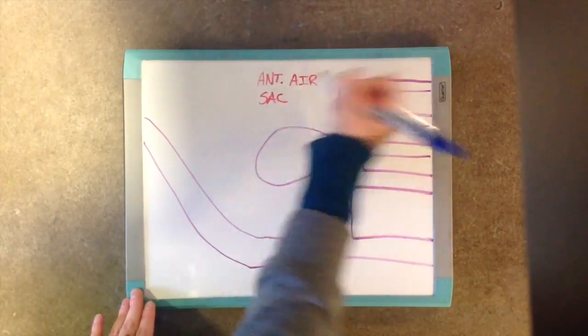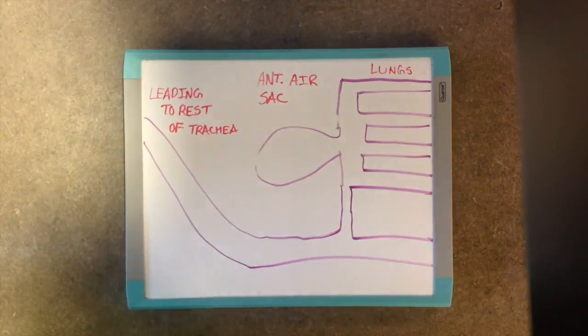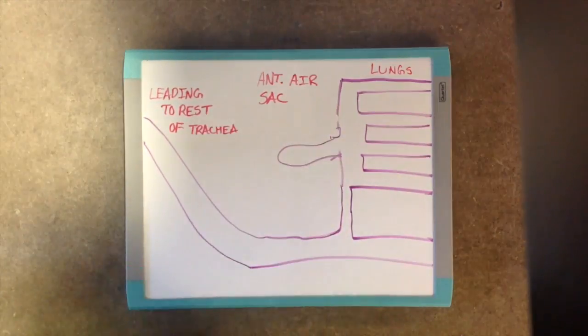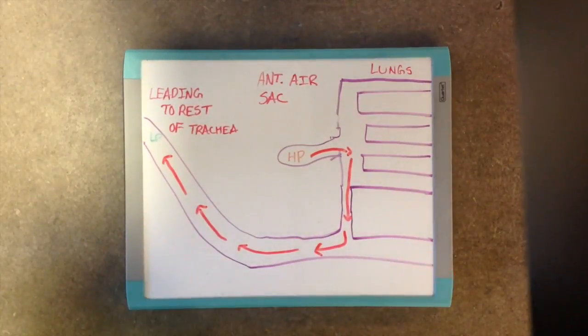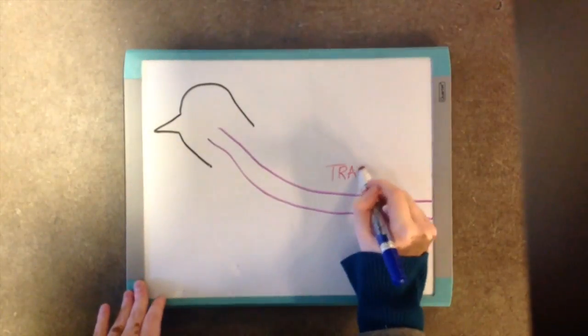This leads us to second expiration, the final step of the cycle. Certain chest muscles cause the anterior air sacs to get smaller, increasing the pressure in the anterior air sacs, causing the air to escape out of the air sacs, through the trachea, to the outside.